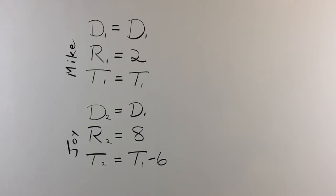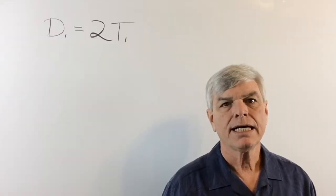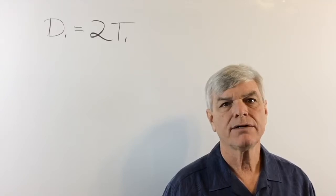We can see for the first object in motion, that is Mike, D1 equals 2T1. Yeah, that's pretty simple. It looks right like that.